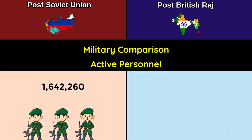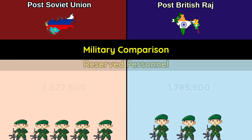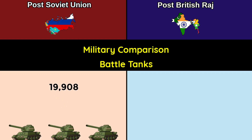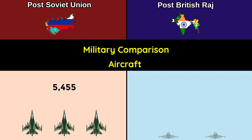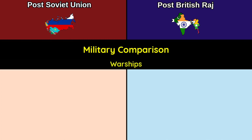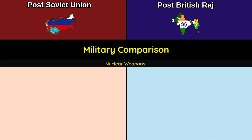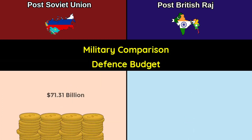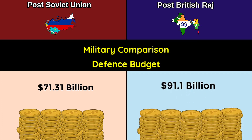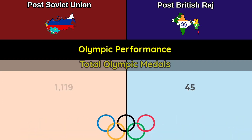Military comparison — Active personnel: 1.64 million versus 2.89 million. Reserve personnel: 3.8 million versus 1.78 million. Battle tanks: 19,908 versus 11,493. Aircraft: 5,455 versus 4,134. Warships: 708 versus 540. Aircraft carriers: 1 versus 2. Submarines: 69 versus 28. Nuclear weapons: 6,257 versus 321. Defense budget: $71.31 billion versus $91.1 billion.